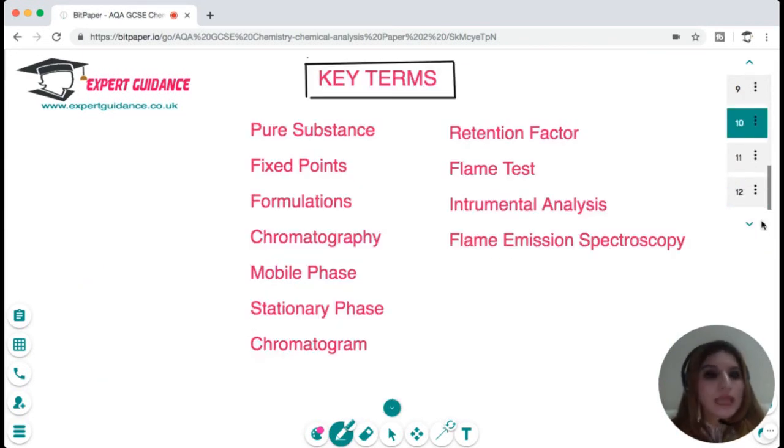I hope this topic is clear to you. Now you should be able to define these terms: what is a pure substance, fixed point, formulation, chromatography, mobile phase, stationary phase, chromatogram, retention factor, flame test, instrumental analysis, and flame emission spectroscopy.